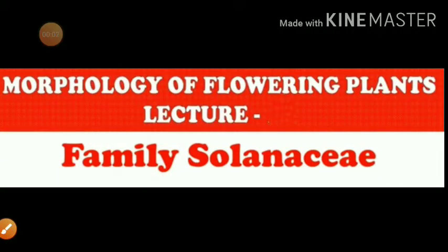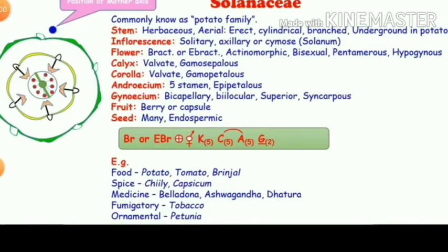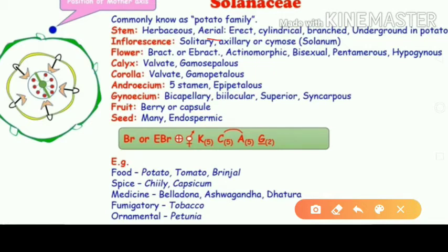Hello guys, a very warm welcome back to our channel. In the previous video we discussed about family Fabaceae. In this video we are going to discuss about family Solanaceae, commonly also known as the potato family. The stem is herbaceous, aerial — meaning it has an aerial part — erect, cylindrical, branched, and underground in potato.